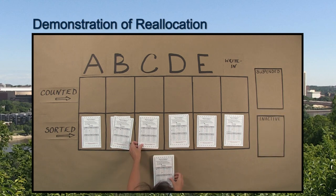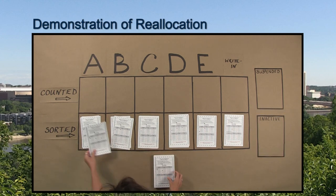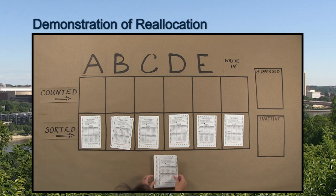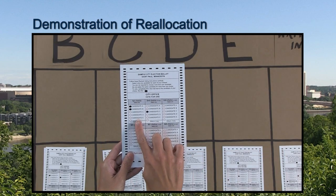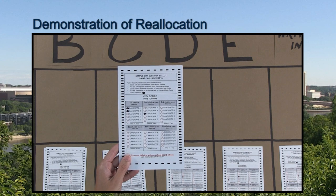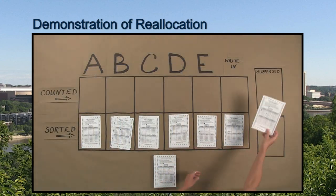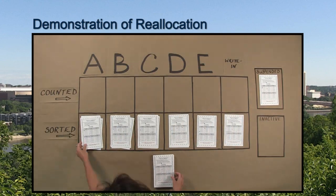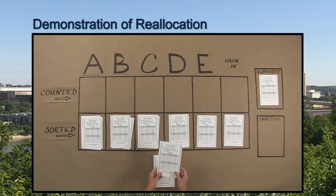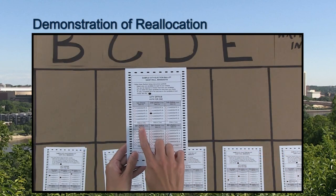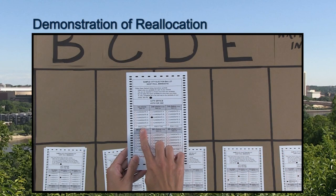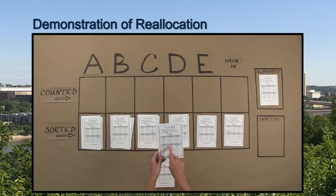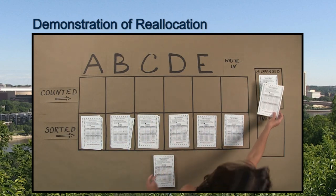A ballot is suspended when the voter's first choice vote cannot be determined. For example, this voter selected more than one candidate as the first choice, and therefore the ballot is suspended until the first reallocation. On this ballot, the voter did not mark a first choice, so the ballot cannot be placed into a first choice pile. It will be suspended until the first reallocation.